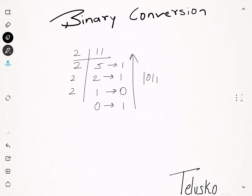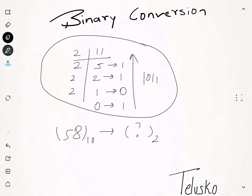When you talk about normal numbers, we work with the decimal system, which has a base of ten. In binary system we use a base of two. To find the binary representation, divide the number by two, collect all the remainders, and read upwards. Try these numbers yourself and let me know the answers in the comments: 58, 12, 16, 25, and 21.